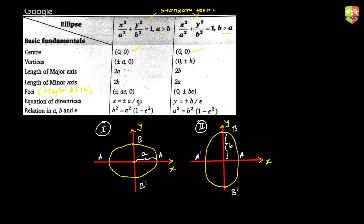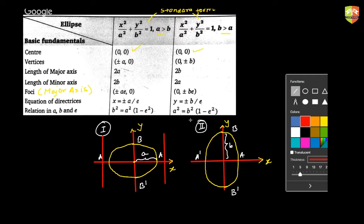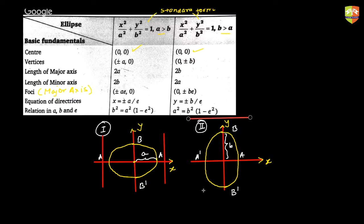The equations of the directrices: for type 1, they are x = a/e and x = −a/e. For type 2, they are y = b/e and y = −b/e. Just remember the change in the expression.